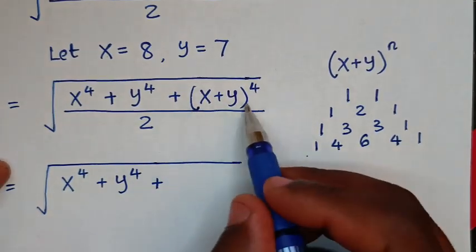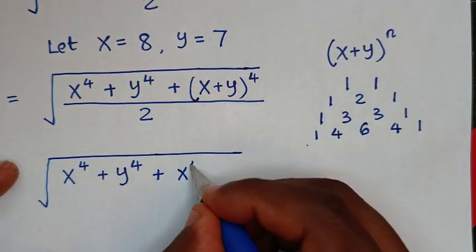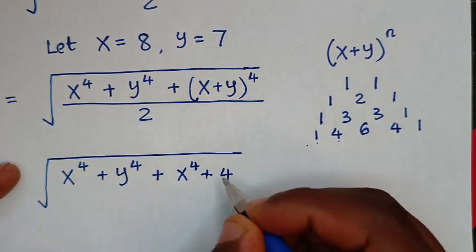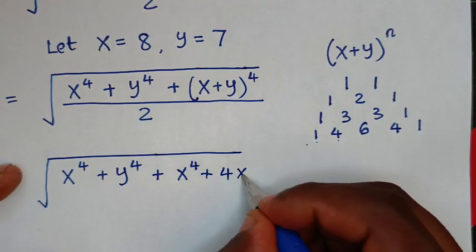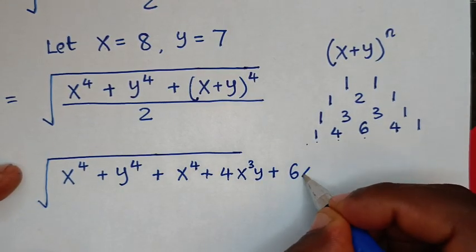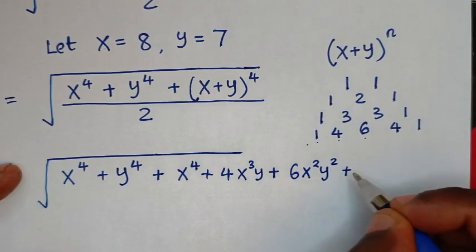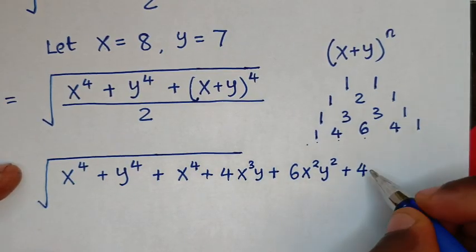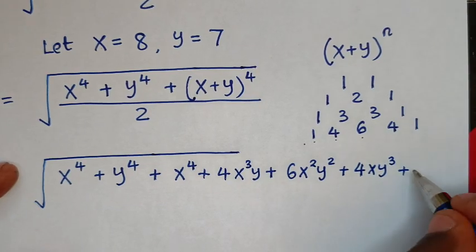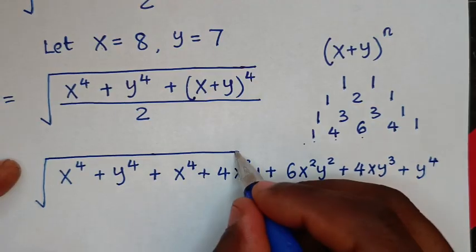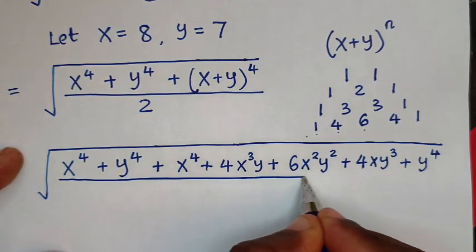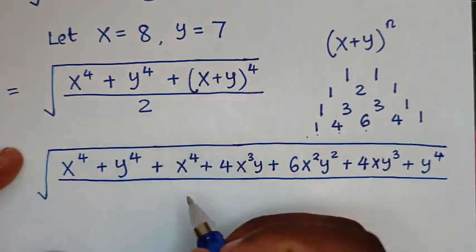Now to expand this: it will be x to the power of 4, plus 4 x cubed y, plus 6 x squared y squared, plus 4 x y cubed, plus y to the power of 4. Then all over 2.